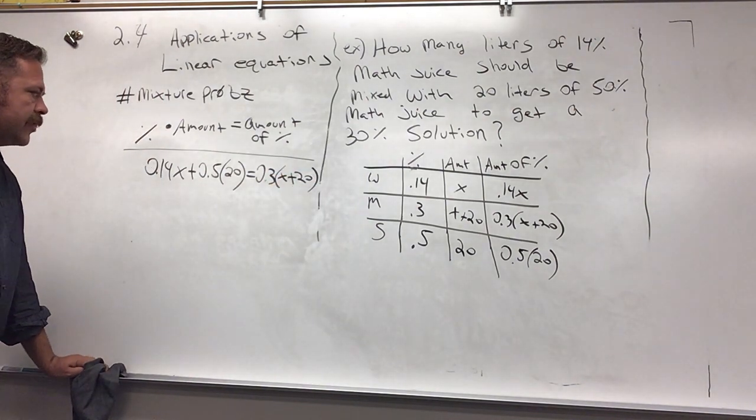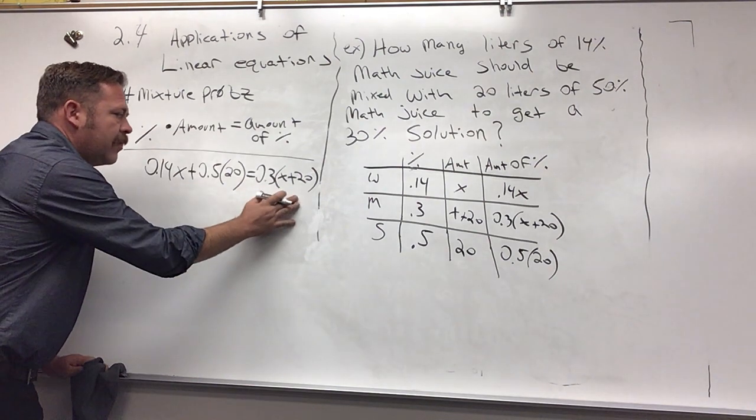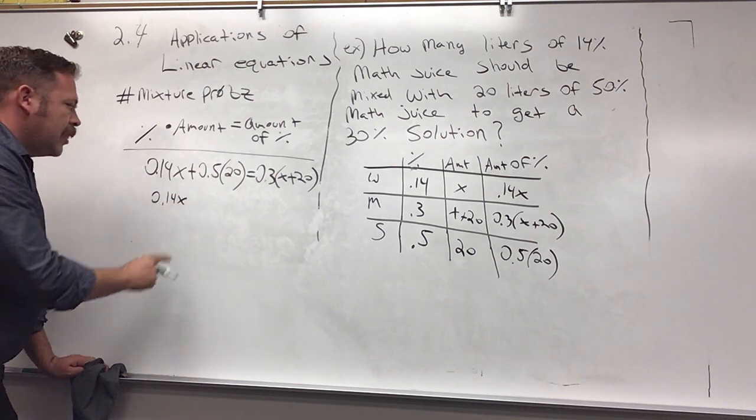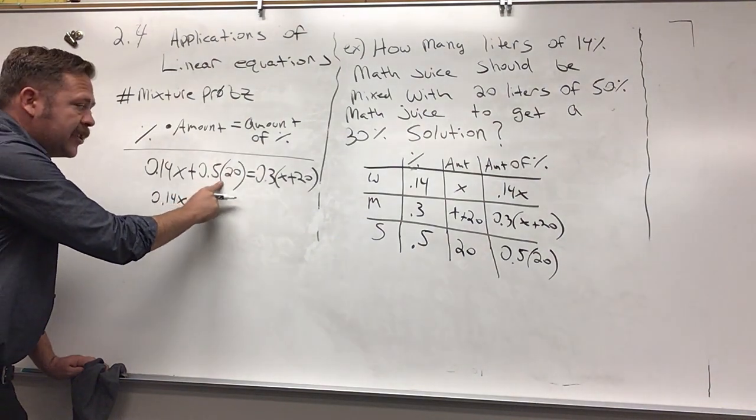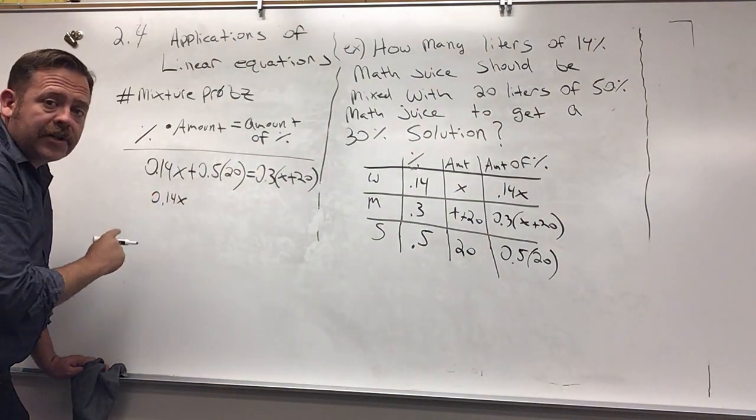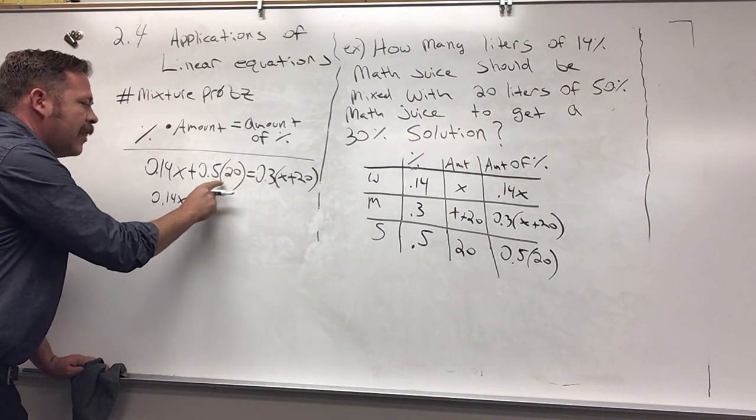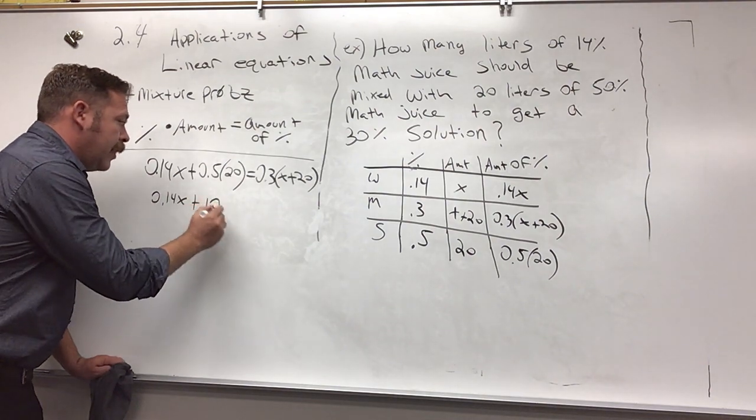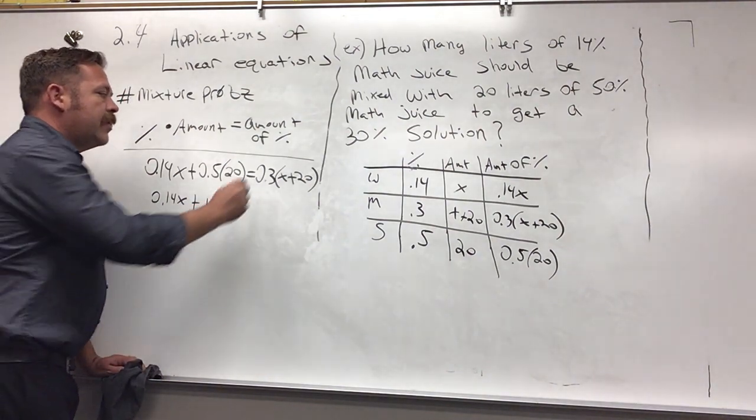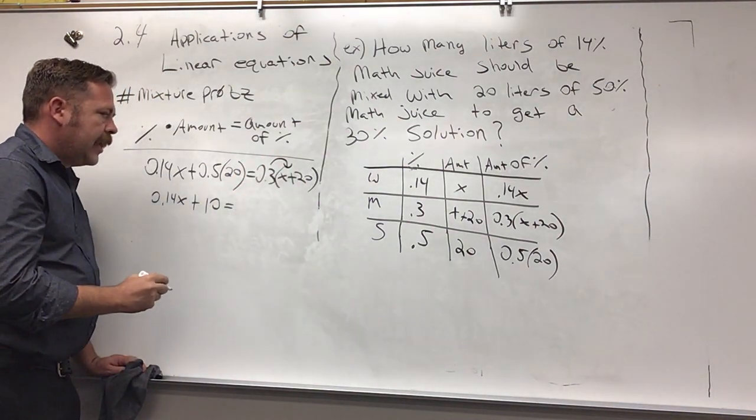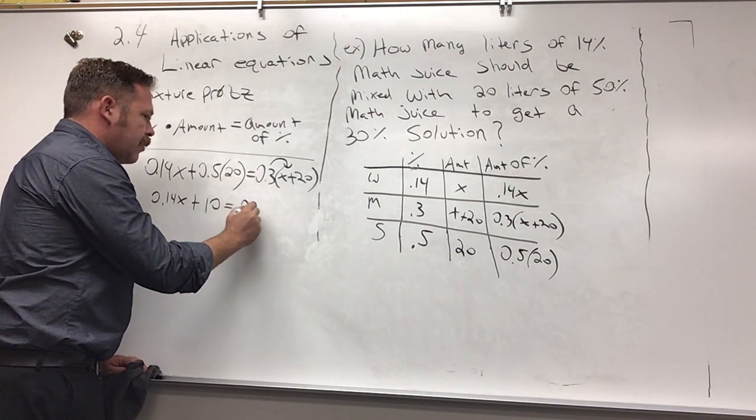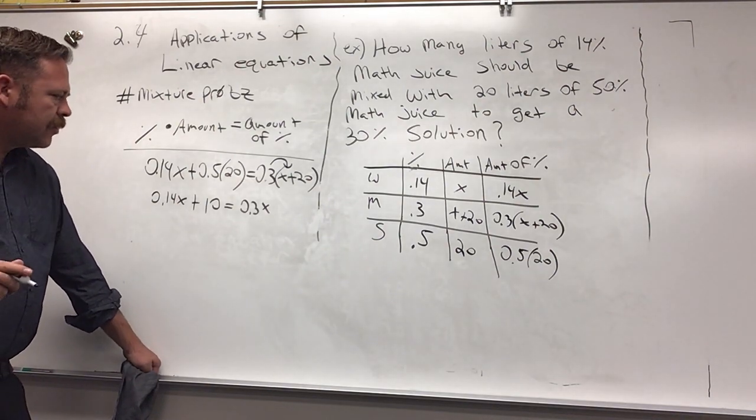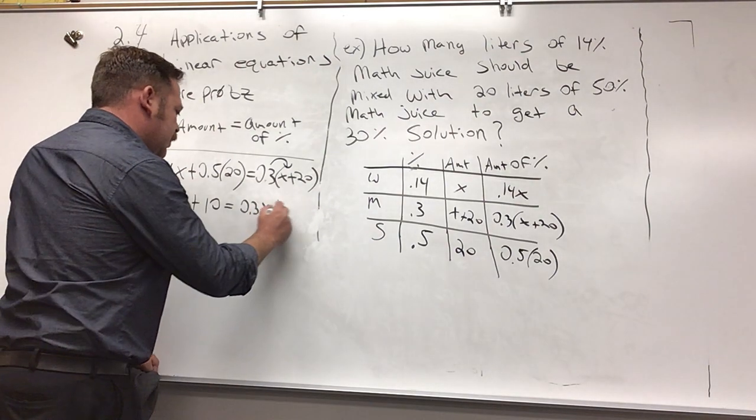Let's distribute first. I have some distributing to do, so I have 0.14x. I might as well multiply that in the same step, plus 0.5 times 20, or half of 20, that's going to be 10. And then when I distribute this here I get 0.3x and 0.3 times 20 is plus 6.